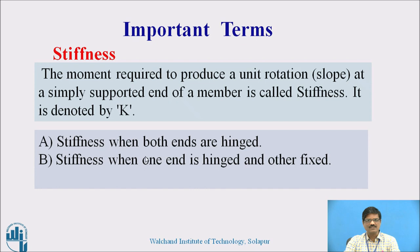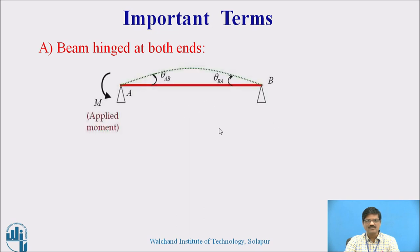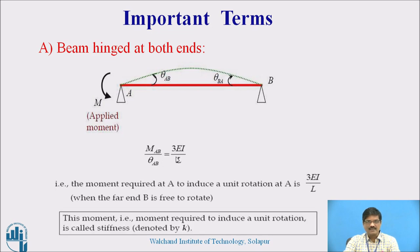We have two cases for stiffness. The first case is a beam hinged at both ends — both A and B are hinged. The moment required to produce a unit rotation at A, when the opposite far end is hinged, can be derived from slope deflection method concepts, and that value is 3EI by L. Therefore, we call 3EI by L the stiffness of this particular member, denoted by K.